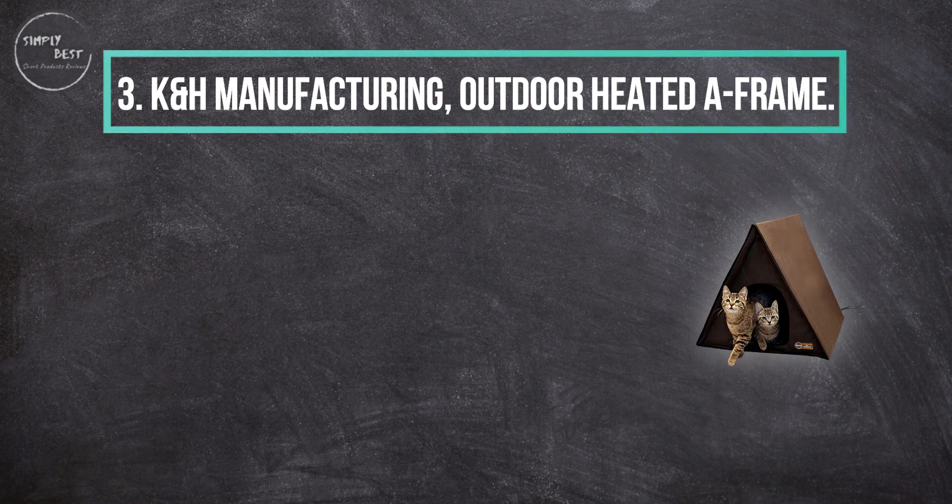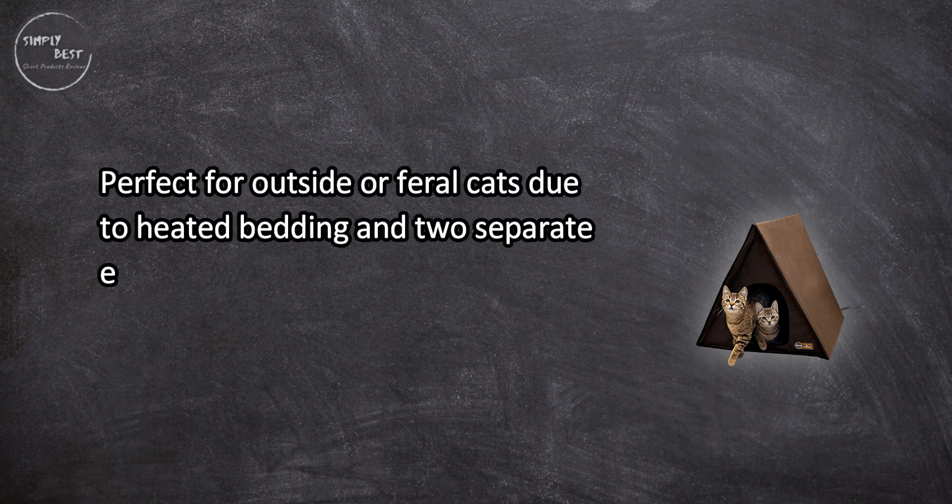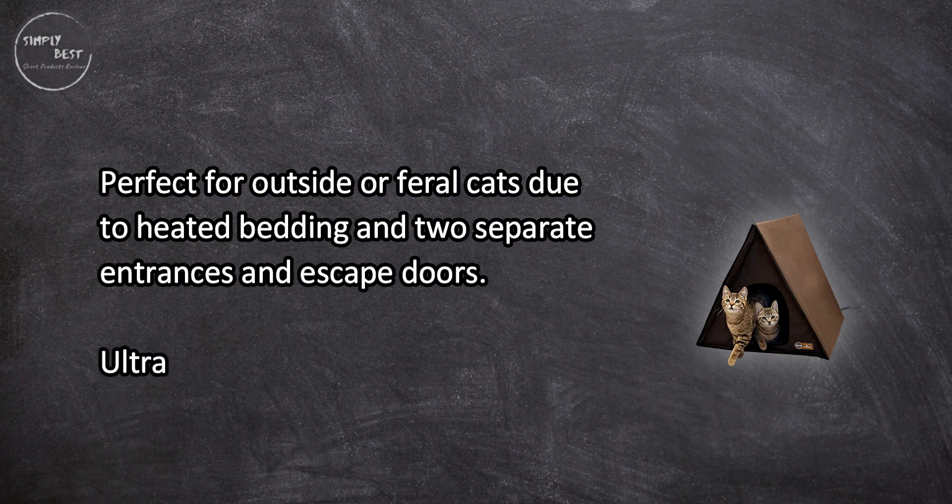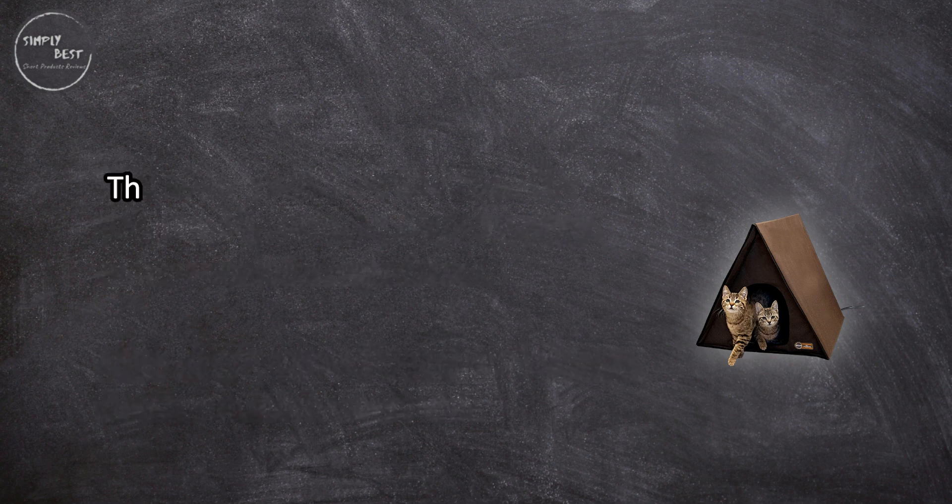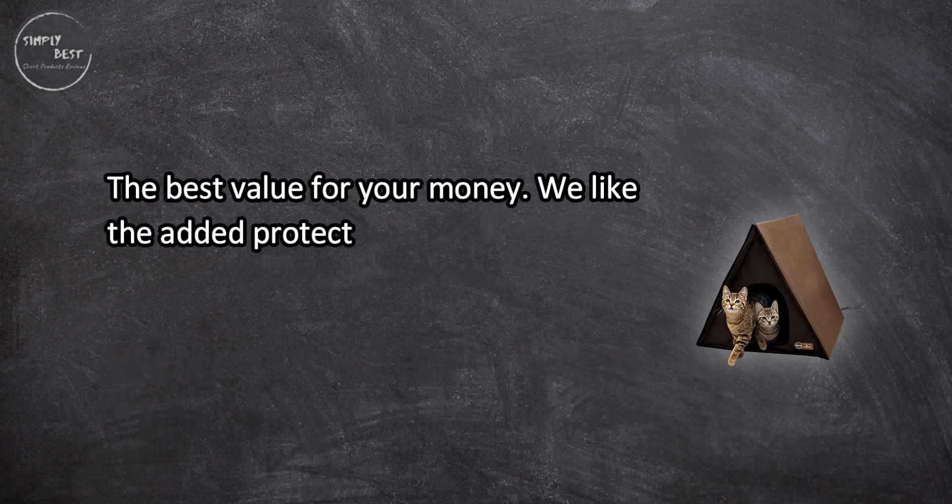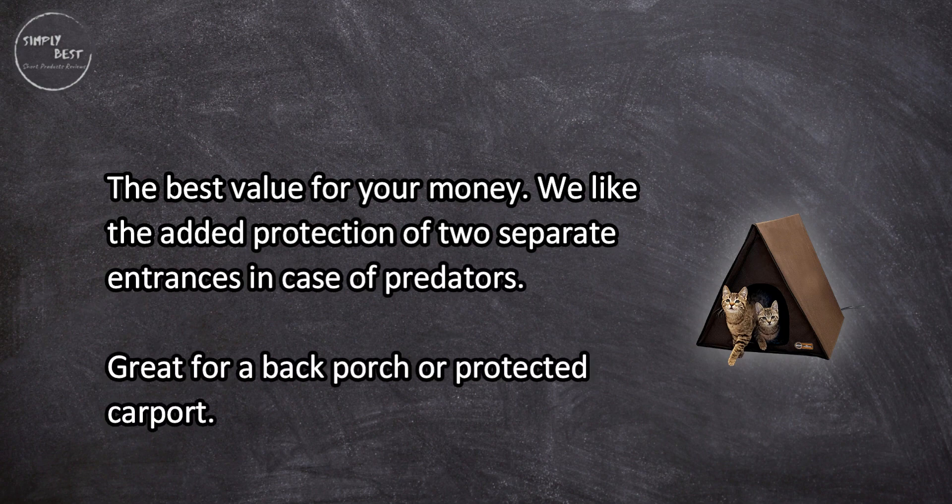At number three, K&H Manufacturing outdoor heated A-frame. Perfect for outside or feral cats due to heated bedding and two separate entrances and escape doors. Ultra simple assembly and sleek design can be used indoors as well. The best value for your money. We like the added protection of two separate entrances in case of predators, great for a back porch or protected carport. Electric power supply, not water resistant, fairly light and flimsy without occupants.